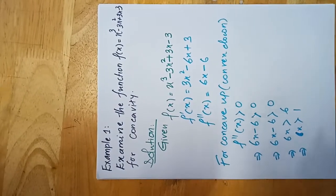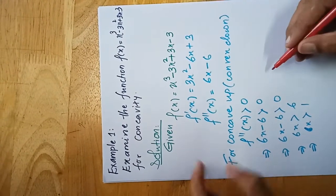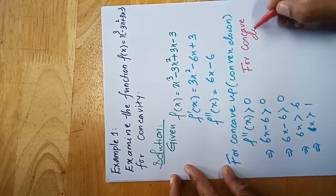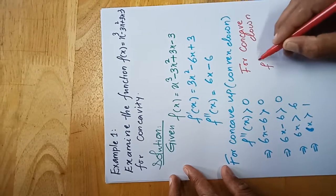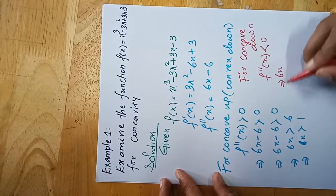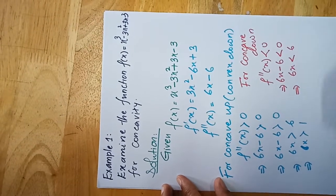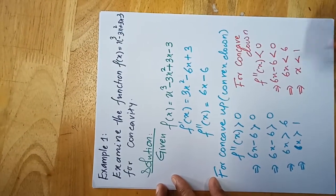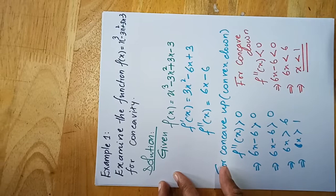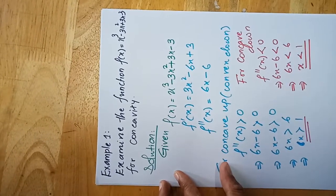For concave down, set f''(x) less than zero: 6x − 6 < 0, which implies 6x < 6, which implies x < 1. So for the function to be concave down, the value of x must be less than one, and for concave up, x must be greater than one.